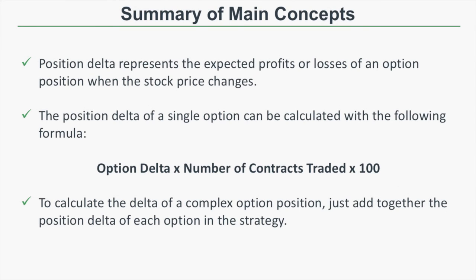Let's review the main concepts from this video. First, position delta represents the expected profits or losses of an option position when the stock price changes by $1. The position delta of a single option is calculated as: option's delta times number of contracts traded times 100. Two things to keep in mind: if you're shorting contracts, the number of contracts is negative; and if you're not trading standard equity options with a multiplier of 100, substitute the appropriate multiplier — for example, S&P 500 futures options use a multiplier of 50. Lastly, to calculate the delta of a complex option position, just sum up the position delta of each option in the strategy.